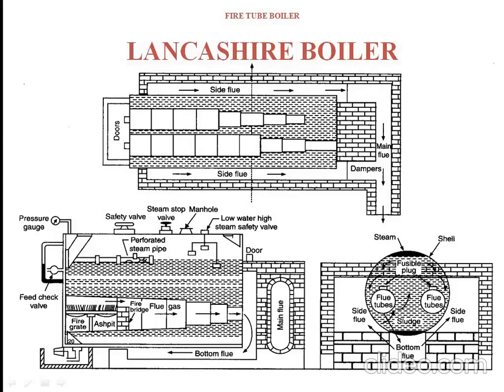Now we can see here, we have three views in third angle projection. This is the front view, this is the side view, and this is the top view. There are two fire tubes — this is the first tube, this is the second tube. In the top view we can see two tubes, but in the front view we can see only one tube, meaning these two tubes are side by side. In the side view you can see two circles. It consists of two large fire tubes and it is internally fired.